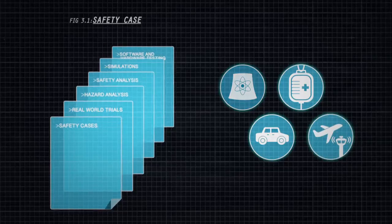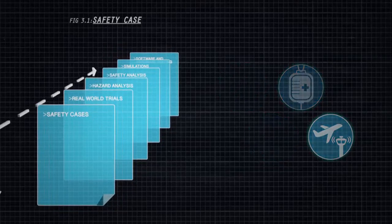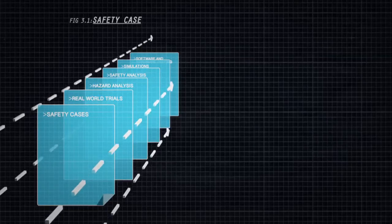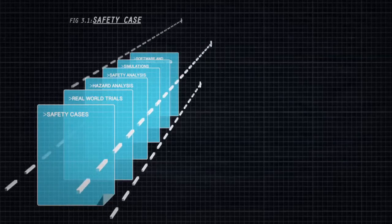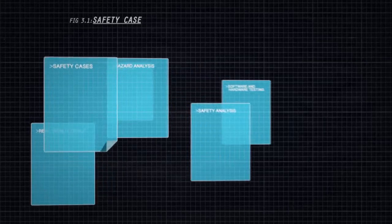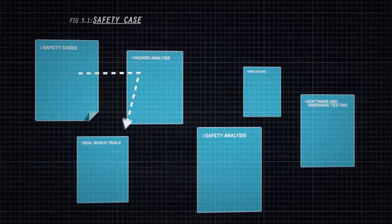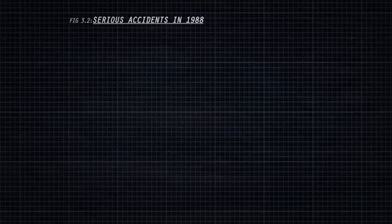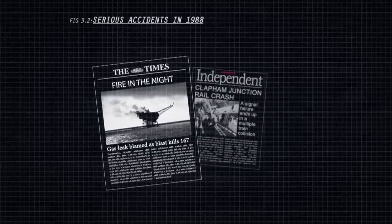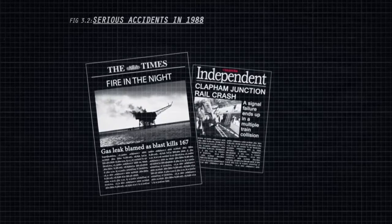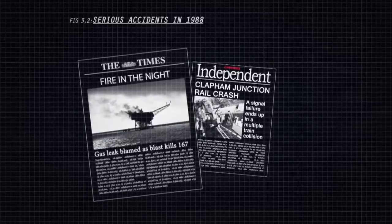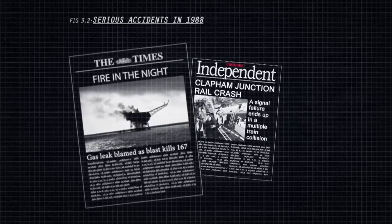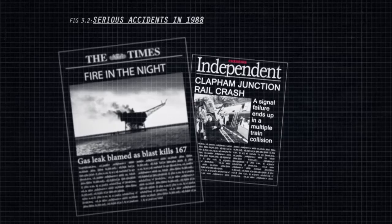Historically, safety case development relied almost exclusively on narrative text to communicate the safety argument within the safety case. This approach suffered from problems of lack of clarity, difficulty in comprehension, and poor structure with insufficient explanation. A number of serious accidents, such as the Piper Alpha disaster and the Clapham Rail disaster, which both took place in 1988, were instrumental in prompting a reconsideration of how safety is managed in the safety-critical sector.